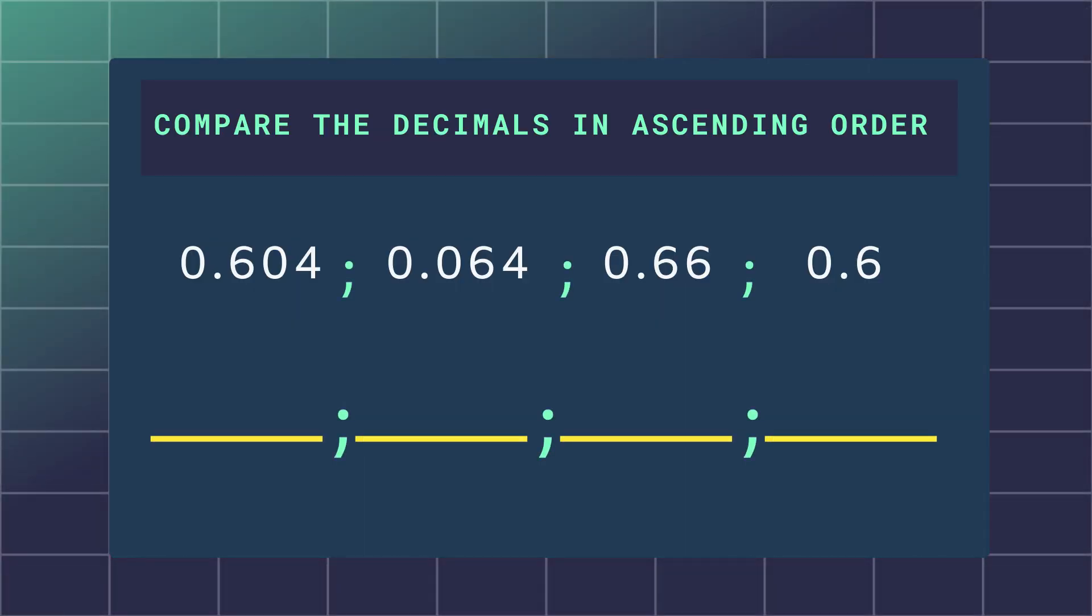You can pause the video and try this example. Compare and order the decimals in ascending order. That means from the smallest to the largest number.